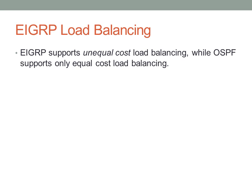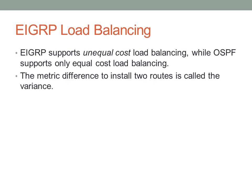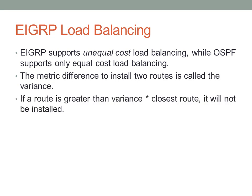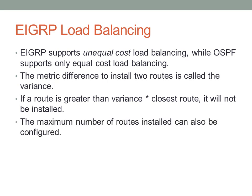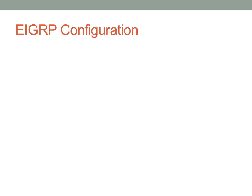EIGRP performs unequal cost load balancing. OSPF only supports equal cost load balancing, but with EIGRP you can set a specific variance and it will load balance based on that variance. The variance defines the metric difference to install two routes. If a route's metric is greater than variance times the closest route's cost, it will not be installed. Load balancing is performed proportionally — if one link is twice as good, it will send two packets over that link for every one on the other. The maximum number of routes installed can also be configured directly.